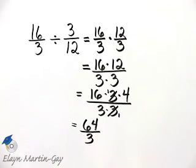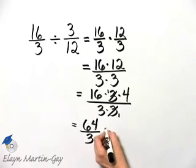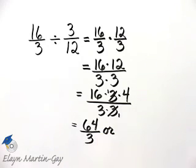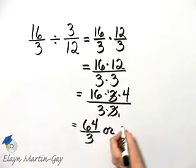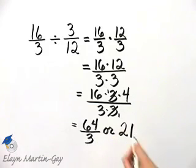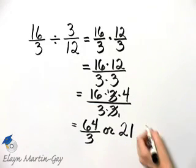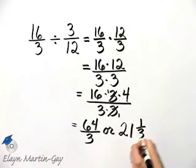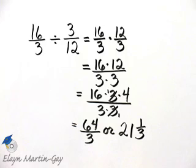Now, that's an improper fraction. You can leave it like that or check with your instructor. We'll write it as an equivalent mixed number also. 3 divides into 6 2 times, and then 3 divides into 4 1 time, and what's my remainder, 1. So as a mixed number, it is equivalently 21 and 1 third. There is my quotient.